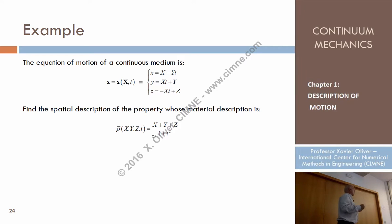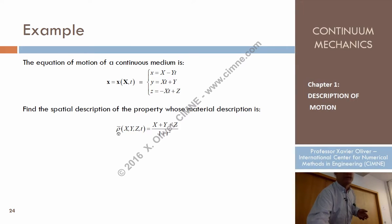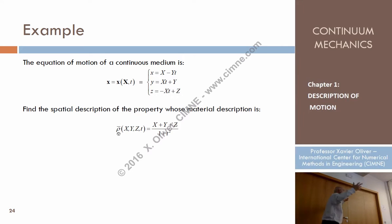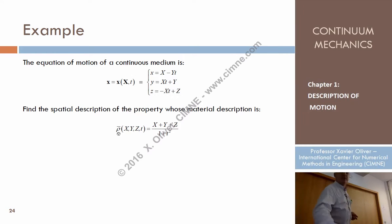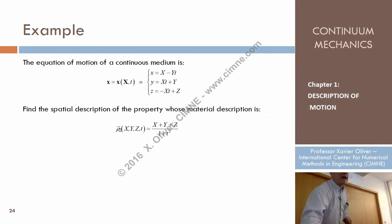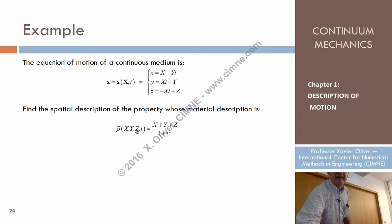In general, functions that describe material descriptions of a property will be described using capital letters, following the rule that the material description is given in capital letters. The point is that sometimes I don't know how to use capital letters — for instance, this is a Greek letter, rho. You know the capital version of rho? I don't. So in cases where I don't have the capital version, I place an upper bar here. That means it wants to be, following the rule, a capital rho. So capital rho of X, Y, Z, t is the material description of the density.